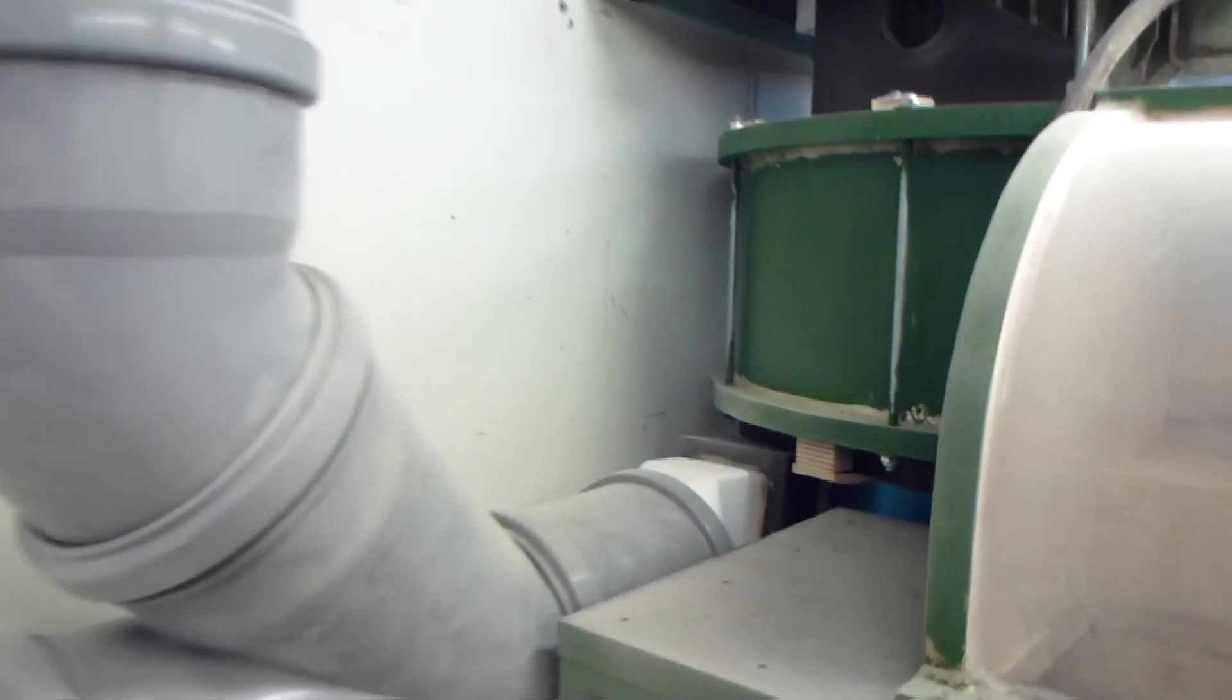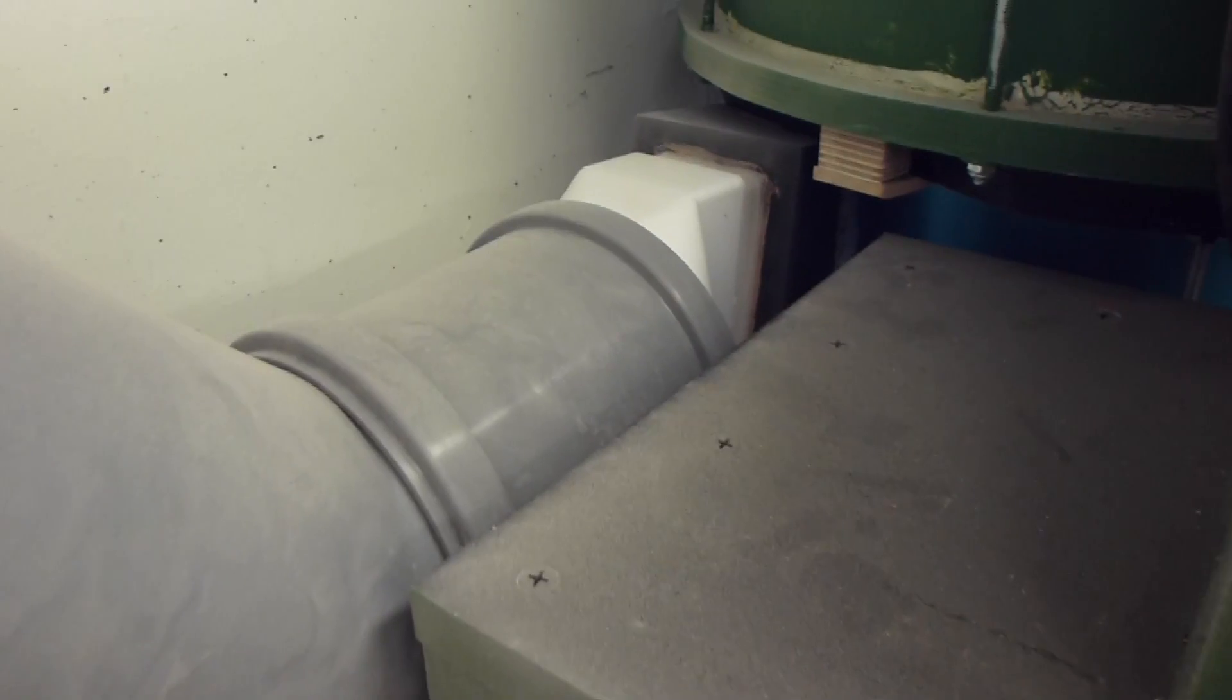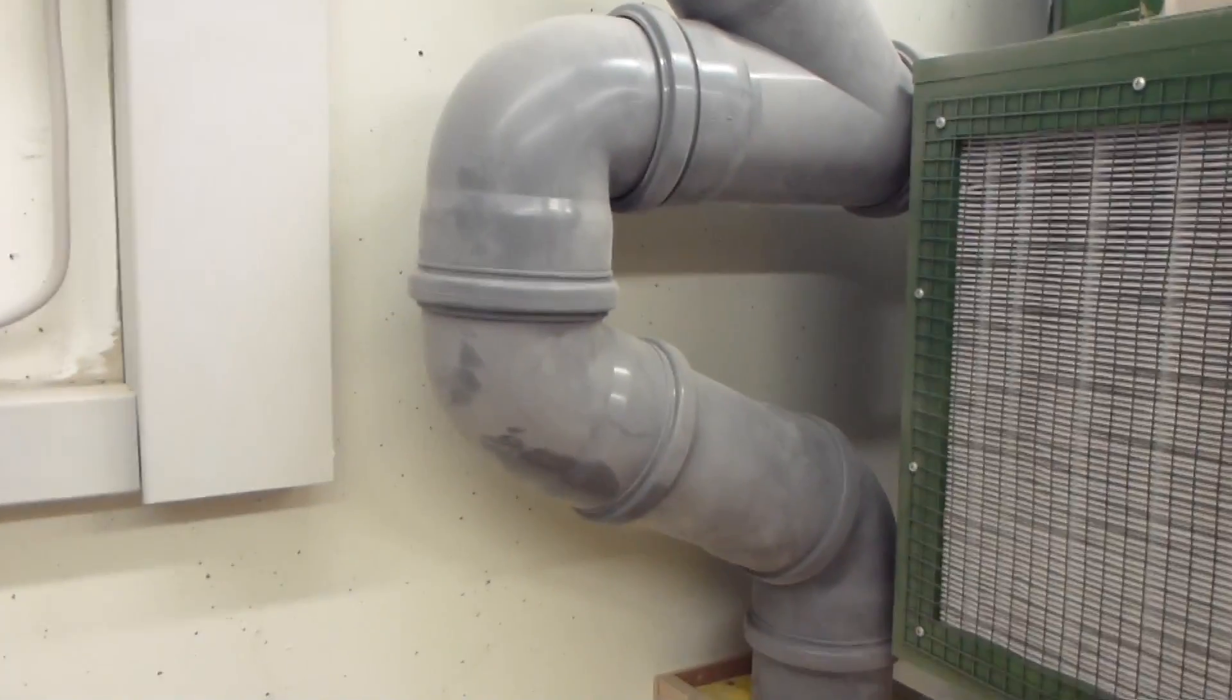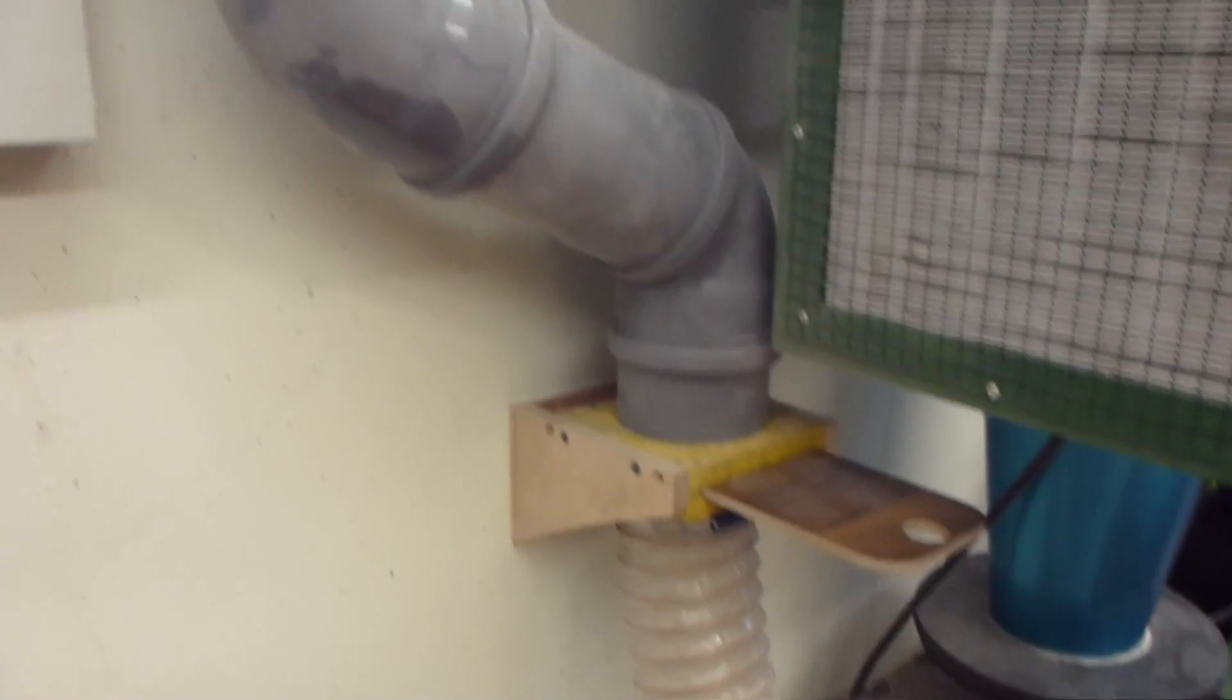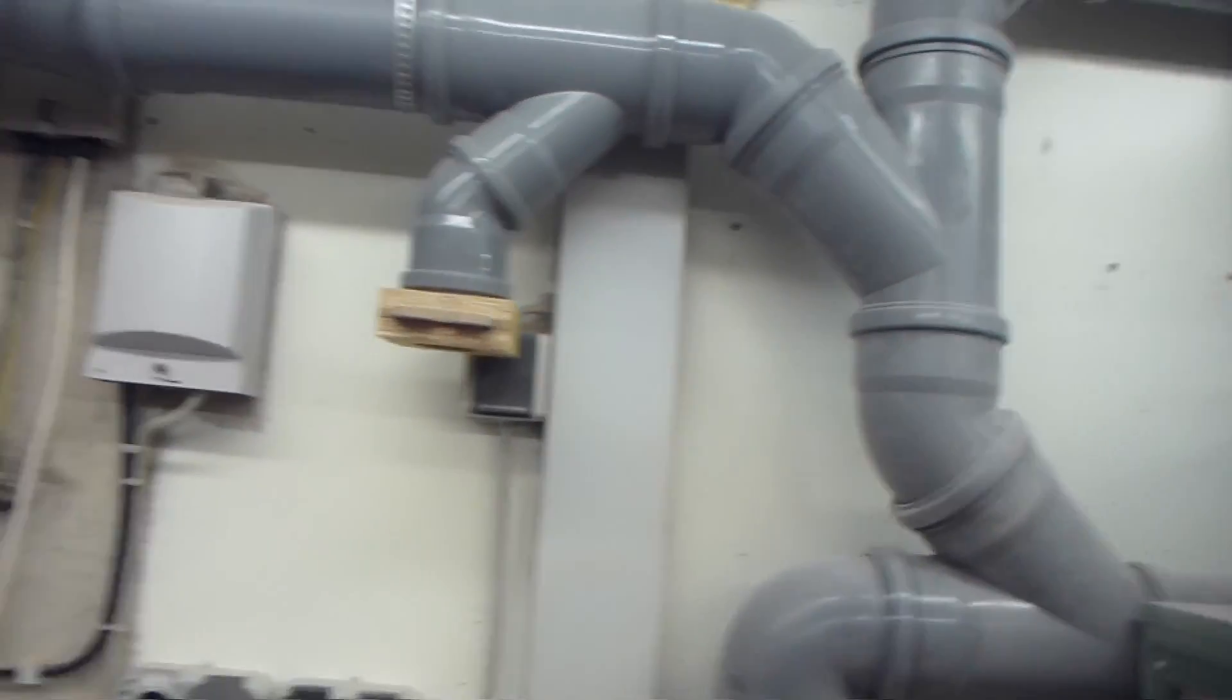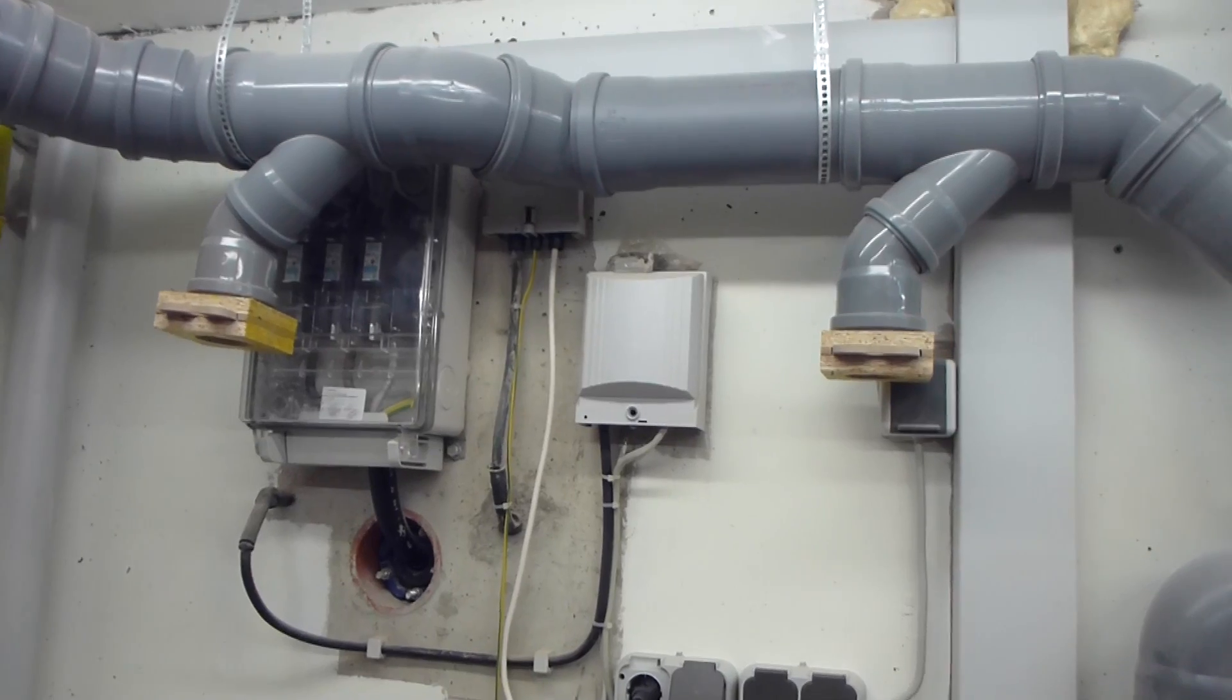The inlet of the dust collector is right near the wall. And from there it connects to almost every machine. The first is for the table saw. Then the line goes to two small inlets for future machines.